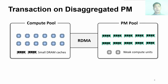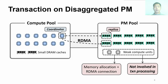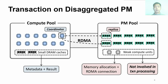When running transactions on disaggregated PM, the replicas are durably stored in the PM pool, which also contains some weak compute units only for memory allocation and RDMA connection. These compute units are not used during transaction processing since they are too weak to handle substantial tasks. The compute pool does not store any replica and runs coordinators to handle transactions that access data in remote PM. The compute pool also contains small DRAM caches to temporarily store processing results and metadata such as remote data addresses. The processing results are finally committed to the PM pool.